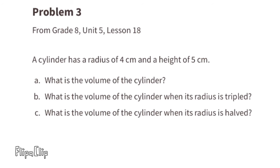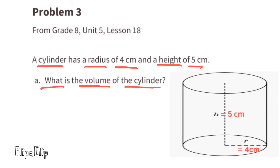A cylinder has a radius of four centimeters and a height of five centimeters. Part a: What is the volume of the cylinder? The information tells us that the radius of the cylinder is four centimeters and the height of the cylinder is five centimeters. We can plug that information into the formula: volume equals π times r² times height.